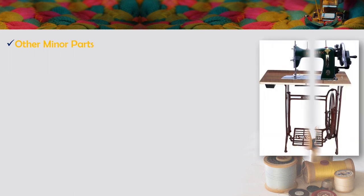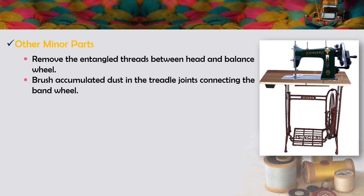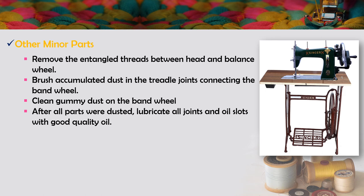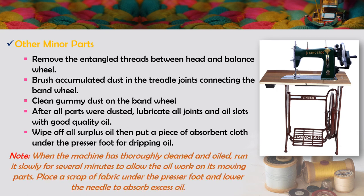For other minor parts: remove any entangled threads between the head and balance wheel. Brush accumulated dust in the threaded joints connecting the band wheel. Clean gummy dust on the band wheel. After all parts are dusted, lubricate all joints and oil slots with good quality oil. Wipe off all surplus oil, then put a piece of absorbent cloth under the presser foot for dripping oil. Note: when the machine has been thoroughly cleaned and oiled, run it slowly for several minutes to allow the oil to work on its moving parts. Place a scrap of fabric under the presser foot and lower the needle to absorb excess oil.